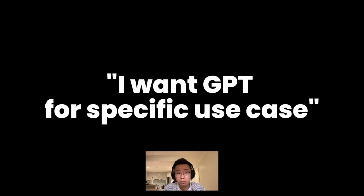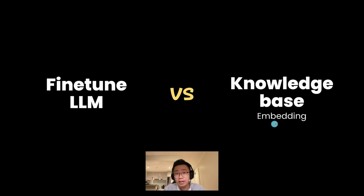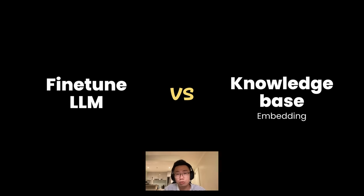A lot of people want GPT for a specific use case, like medical or legal, but there are two methods to consider. One method is fine-tuning, which means you retrain the large language model with a lot of private data you are holding. Another is a knowledge base, which means you are not retraining the model — instead, you create an embedding or vector database of all your knowledge and find relevant data to feed into the large language model as part of a prompt. These two methods serve different purposes.